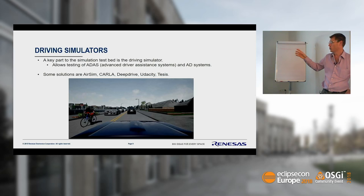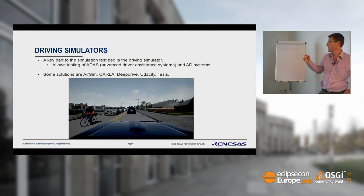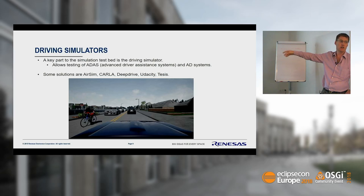Carla has two default environments — one downtown, one more rural — and you can control how many cars or pedestrians wander around the environment. You have an actor car that you basically control as part of your autonomous driving testing.